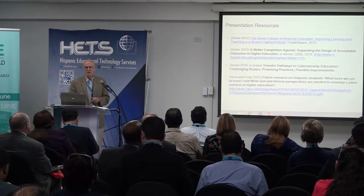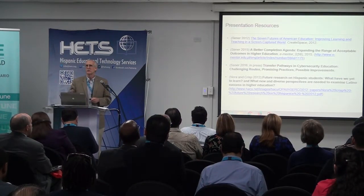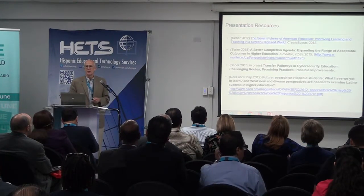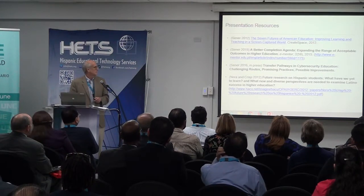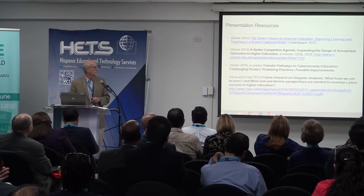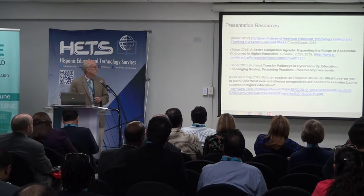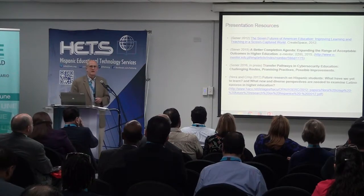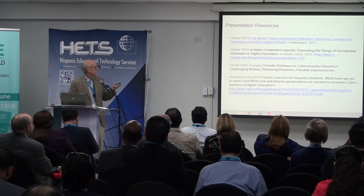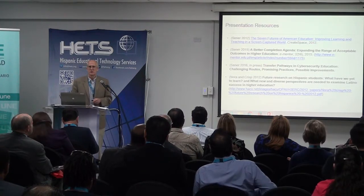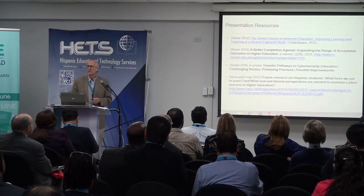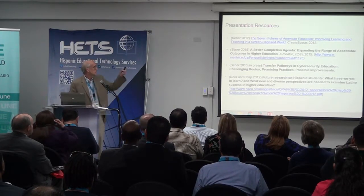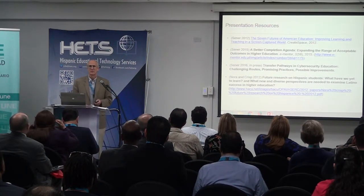The paper is titled Expanding the Range of Acceptable Outcomes in Higher Education. I'll also be referring to some of the resources I used to write that article, as well as a paper I'm writing that will be published probably this month or next month on transfer pathways in cybersecurity education, which is one of the areas I do a lot of work in these days. In doing some research to prepare this presentation, I found an interesting paper by the authors Nora and Chris in 2012. I assume the slides will be made available to you so you can access the links.